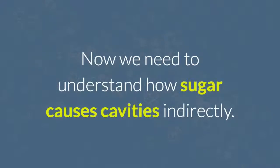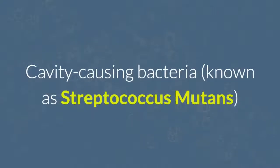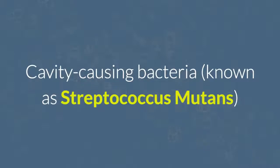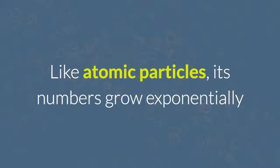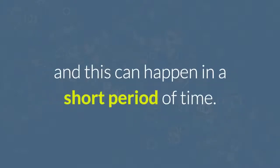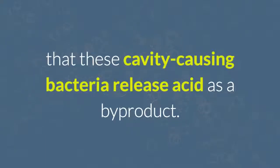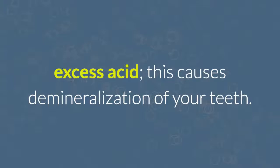Now we need to understand how sugar causes cavities indirectly. Cavity-causing bacteria, known as Streptococcus mutans, utilizes sugar as an energy source in order to multiply. Like atomic particles, its numbers grow exponentially, and this can happen in a short period of time. What complicates matters is that these cavity-causing bacteria release acid as a byproduct. So when there's a huge colony of bacteria releasing excess acid, this causes demineralization of your teeth.